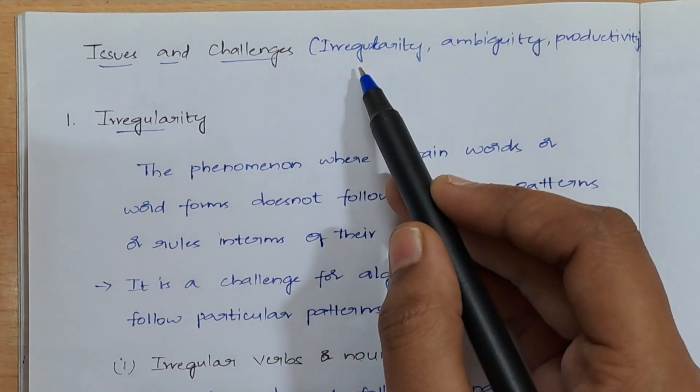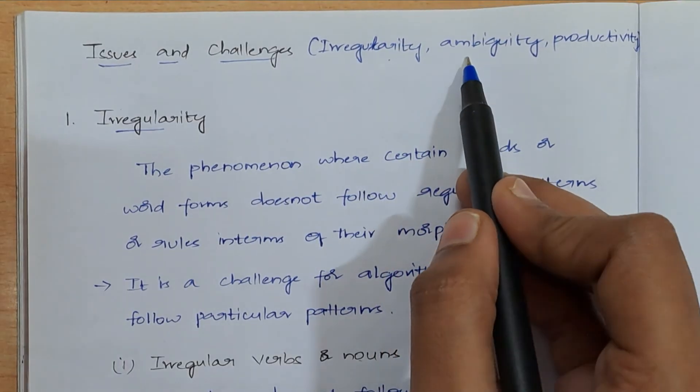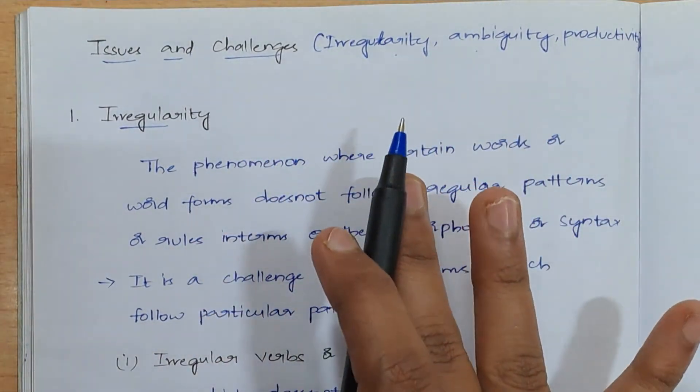There are three issues and challenges. First one is irregularity, second is ambiguity, and the third is productivity. Let's discuss each of these briefly now.